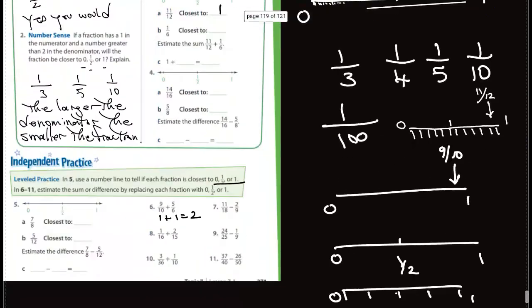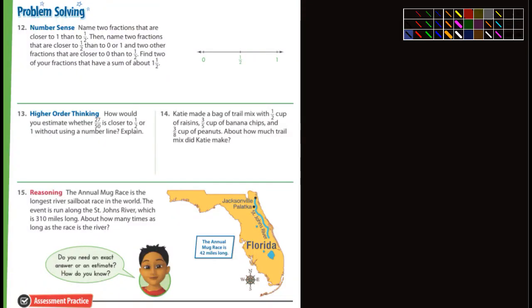All right. Next page. Let's take a look here. Name two fractions that are closer to one than one-half. Then name two fractions that are closer to one-half than to zero or one. And two fractions that are closer to zero than to one-half. Find two of your fractions that have a sum of about one and one-half. You could do that. So for example, I'll do the first part here. Name two fractions that are closer to one than one-half. Well, nine-tenths is closer to one than one-half. And how about something like 14-fifteenths? That's certainly closer to one than one-half.